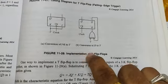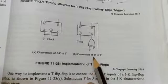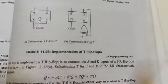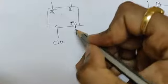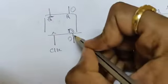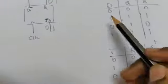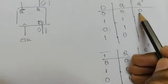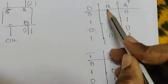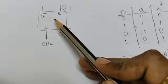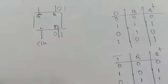This is how you convert D to T. So this is the D flip-flop. If I pass 0, the output will be 0. If I pass 1, the output will be 1. No matter what the present state is — whatever data you pass into the D flip-flop, that will be the next state.